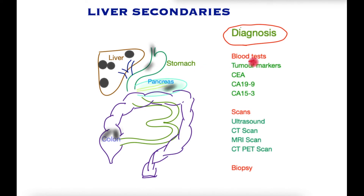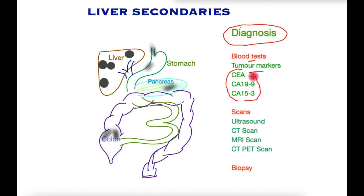Blood tests called tumor markers are often performed on patients with known cancers during surveillance, and an increase in tumor markers may indicate that the cancer may have spread. However, the commonest way of diagnosis is with scans.